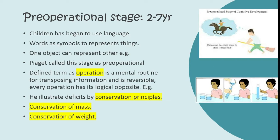Piaget illustrated this deficit through experiments on what he called conservation. As adults, we take the law of conservation for granted, but for a child in this stage it is not yet understood.